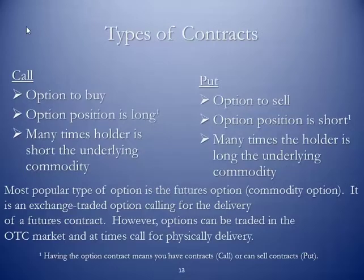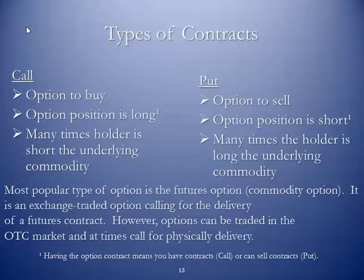There are two types of options contracts: the call and the put. A call is an option to buy. Within the option, you have a designated commodity, the number of contracts, and a specified price. Your option position is long. Once you buy a call option, since you have the right to buy the contracts, your option position is considered long. So many times the holder is short the underlying commodity. For example, a crude oil refiner would want to buy a call option for crude oil contracts, thus having the right to buy the crude oil contracts at a certain price — again, not the obligation. So while their physical position is short, their options position is long.